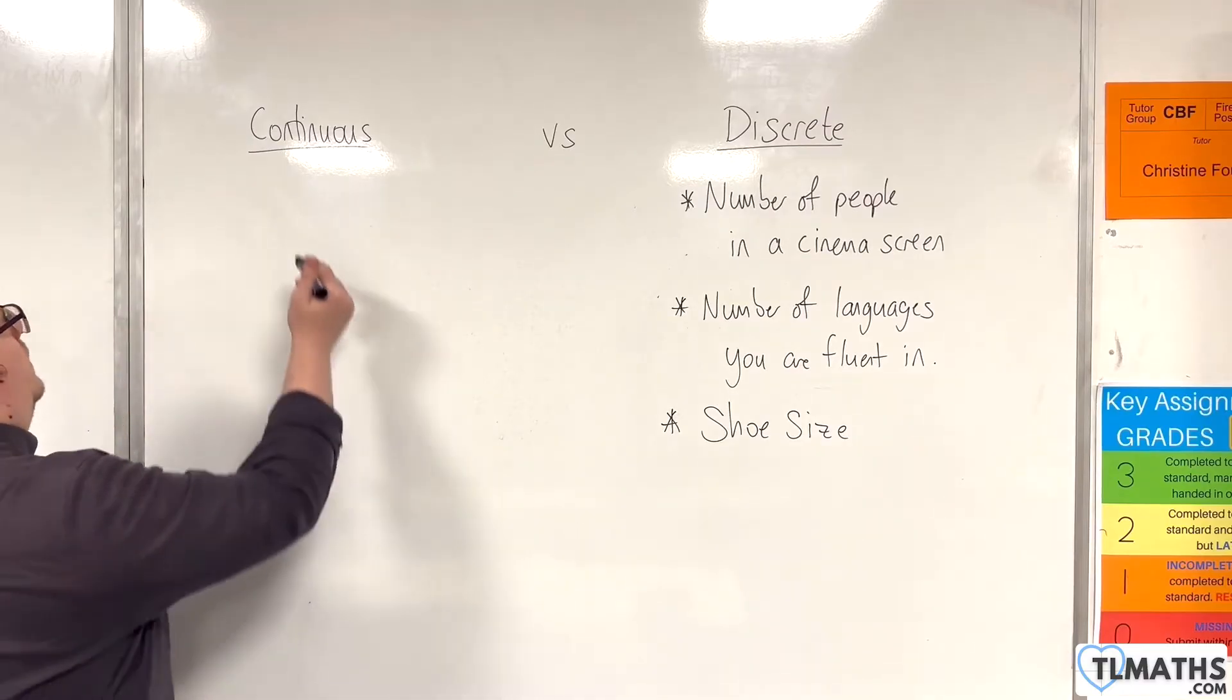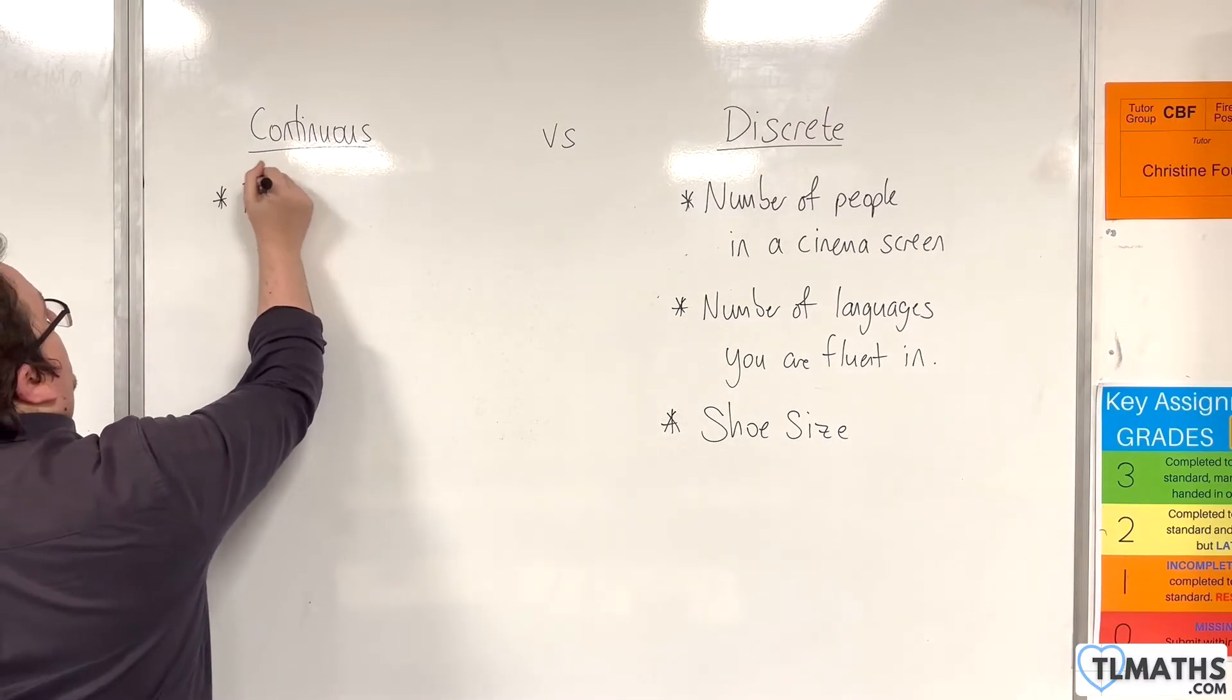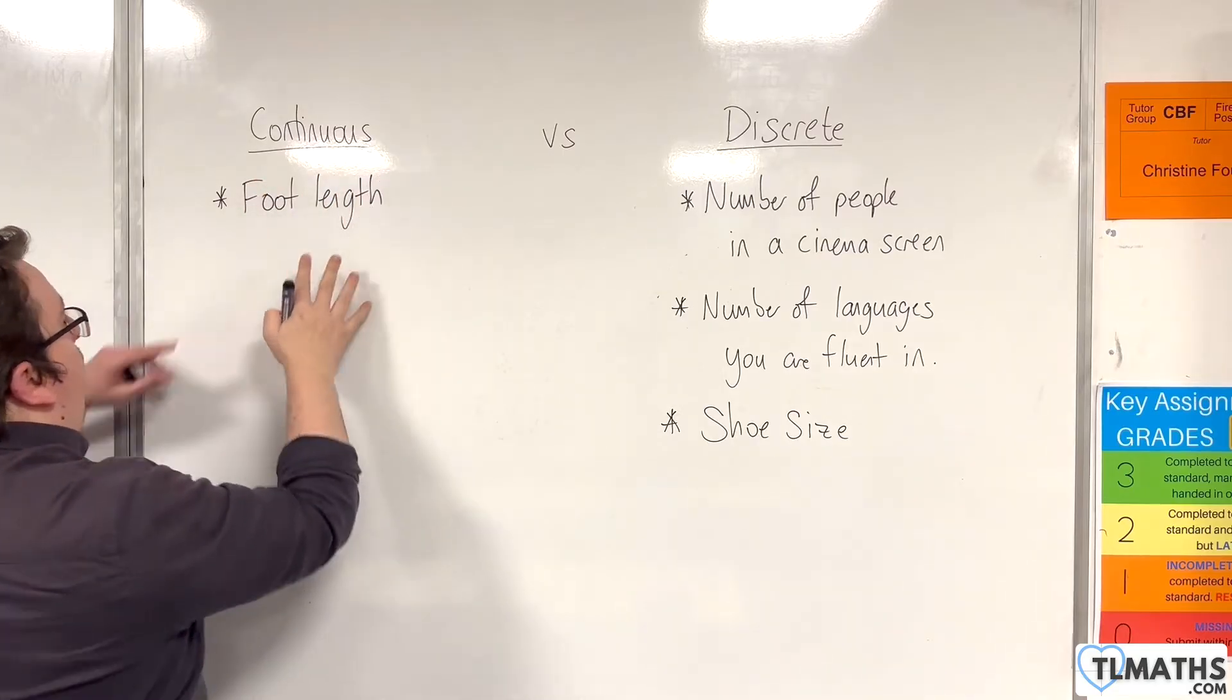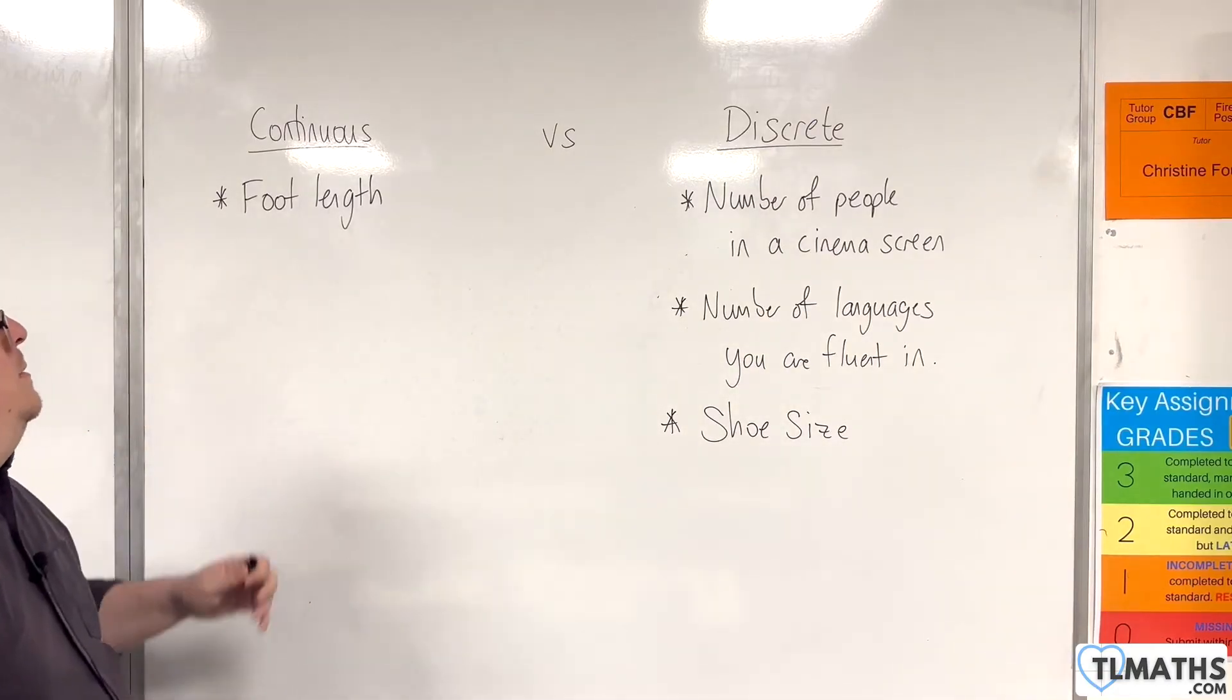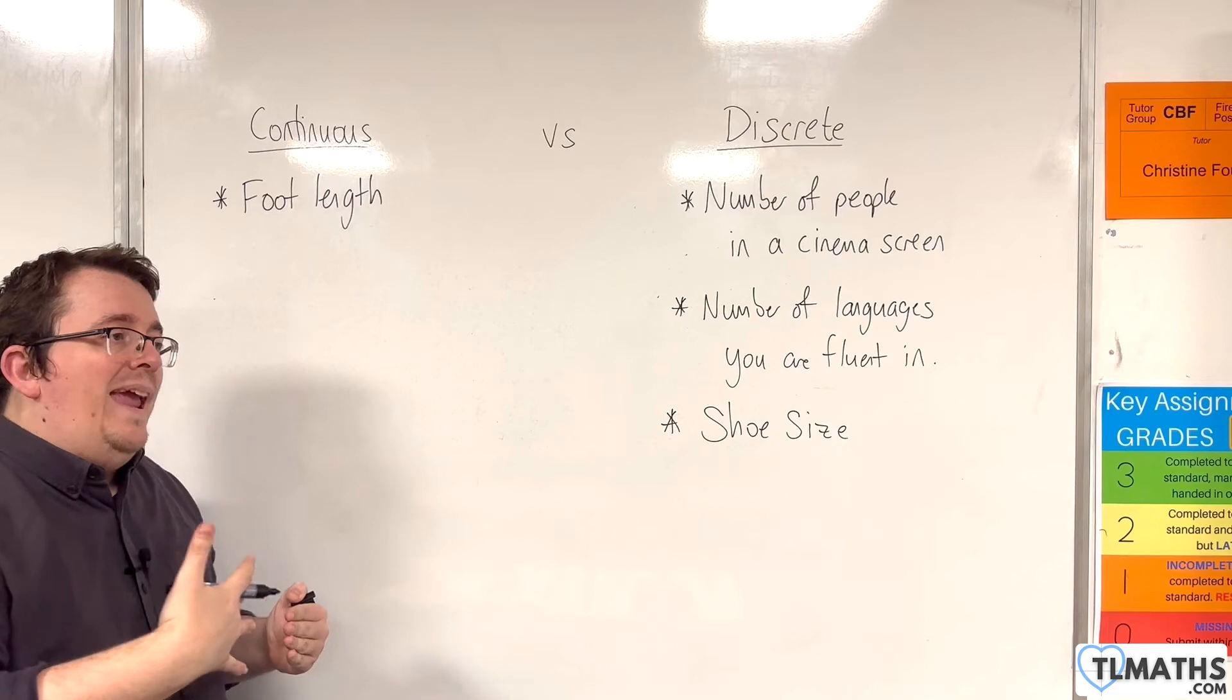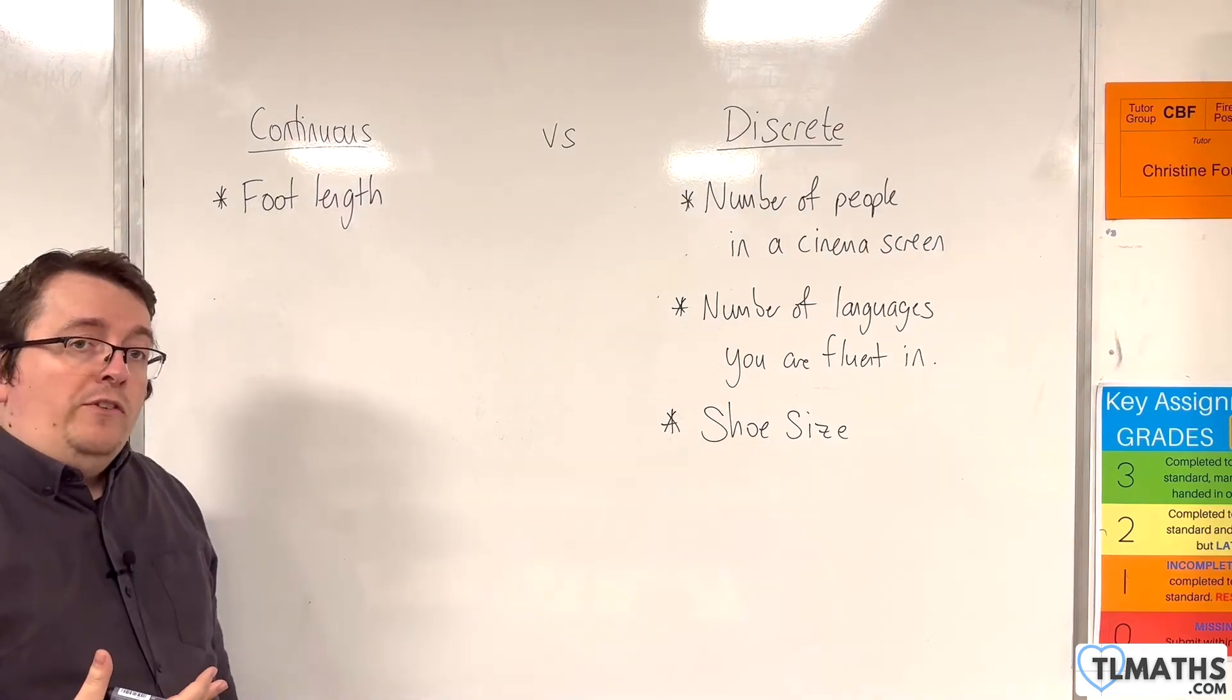Whereas foot length would be considered continuous. Now you'd think that these two are closely linked, but foot length, you measure somebody's foot length, and you could go into ever increasing degrees of accuracy.